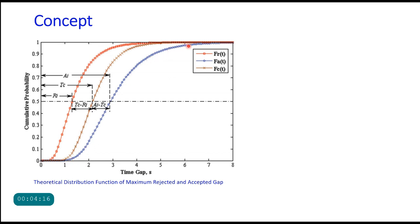What it assumes is that the F(C)t, the distribution for critical gap, would lie between these two distributions. This is the difference of rejected gap and critical gap, Tc minus Ri, and this is the difference between the accepted gap and the critical gap.